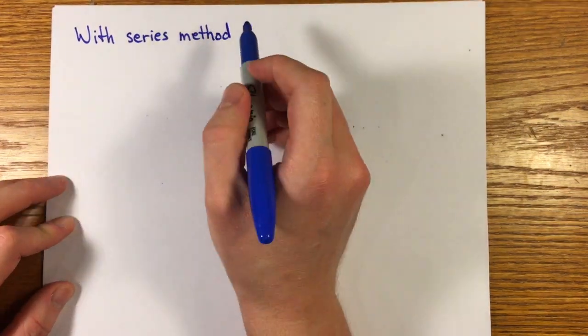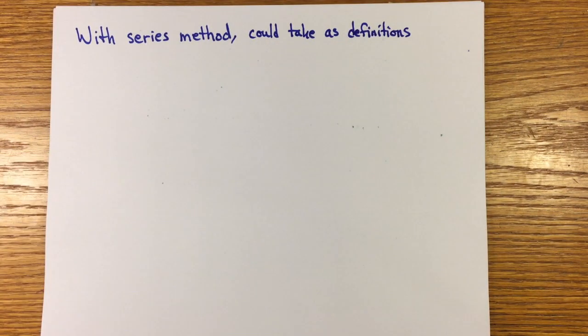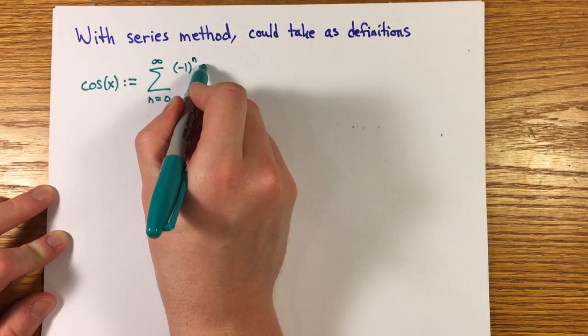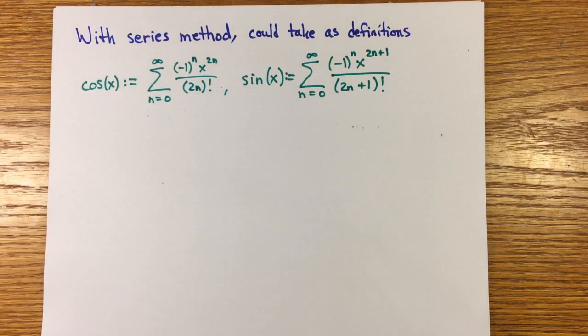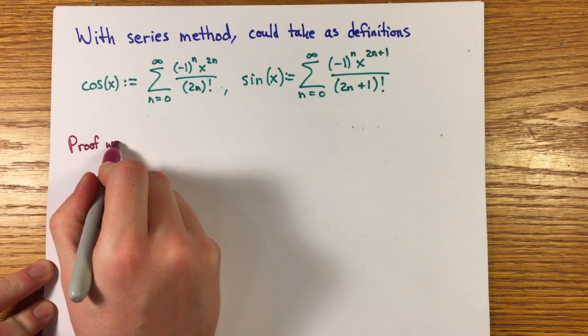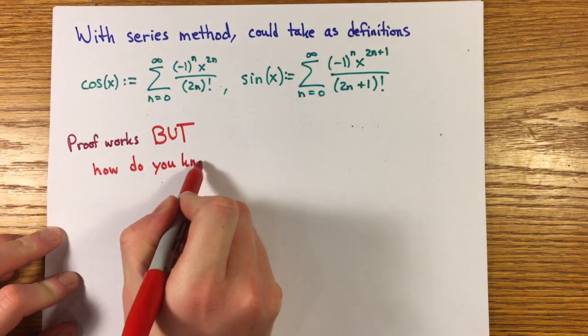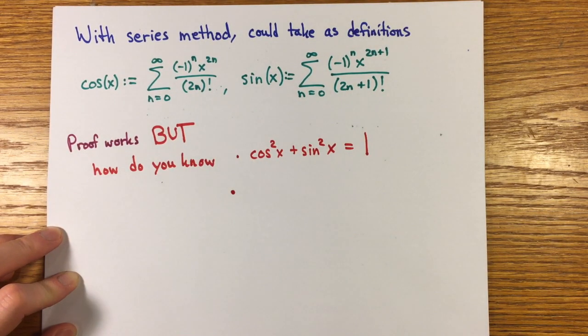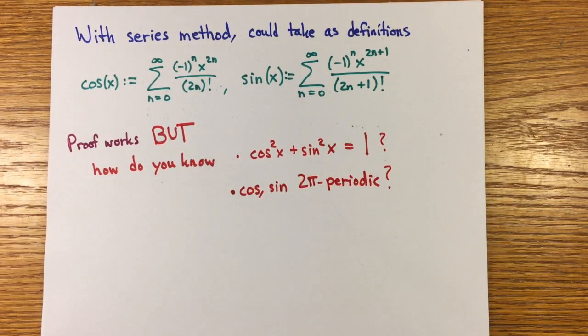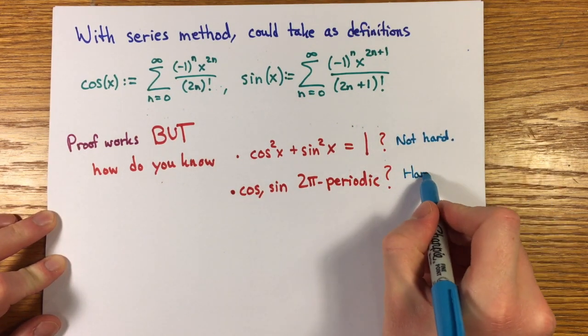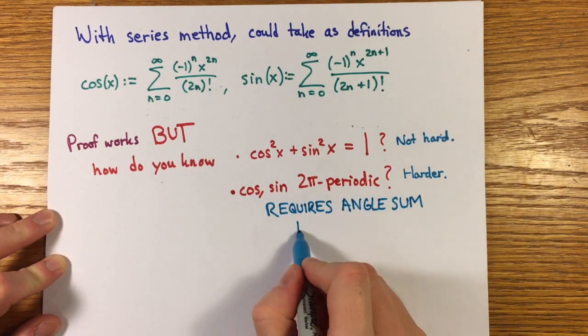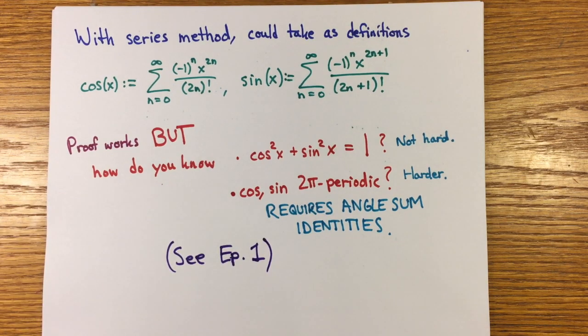If one simply took the Taylor series as the definitions of sine and cosine, it seems like you could get around needing the angle sum identities to prove Euler's identity, but that comes at the cost of having to work to establish the geometric meaning of these functions, including, for example, the periodicity of these functions, which does require establishing the angle sum identities.